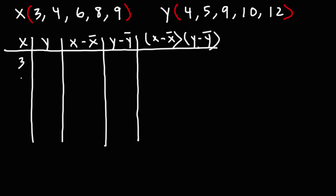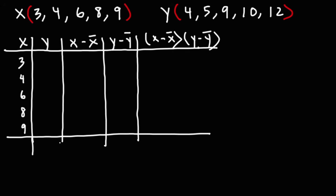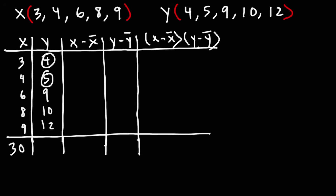The x values are 3, 4, 6, 8, and 9. The y values are 4, 5, 9, 10, and 12. The sum of the x values is 30, and the sum of the y values is 40.